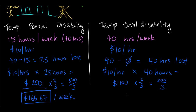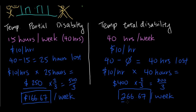The insurance company will pay you $266.67 until you go back to work. And that is the difference between temporary total disability and temporary partial disability.